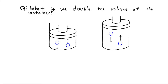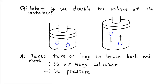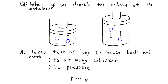What if we change the scenario by doubling the volume of the container? Our particle, which is bouncing back and forth, now has twice as far to travel, so it strikes the lid half as often. Because we have half as many collisions, we have half as much force, so half as much pressure. When volume goes up, pressure goes down — that's an inverse proportion. We write that pressure is proportional to one over the volume. If we double the volume, we have half the pressure; triple the volume, one-third the pressure.